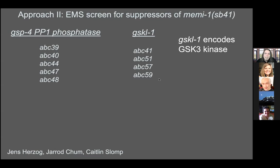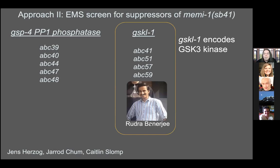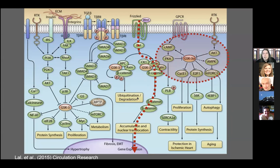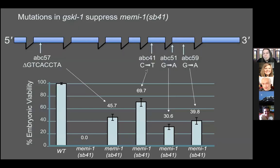We used another type of screen — EMS mutagenesis — to identify more components of this pathway. We found about 30 things, including mutations in GSP4, confirming the screen works the same way as the RNAi screen. We also got another gene called GSKL1 with four different mutations. GSKL1 encodes a kinase called GSK3. The work I'm going to talk about now is mostly done by Rudra Banerjee, a PhD student in my lab. GSK3 enzymes have a lot of roles in development and cell biology. They became somewhat famous for their role in the Wnt signaling pathway, where they are involved in targeting a protein for degradation. They're also involved in other pathways implicated in proliferation and cell cycle control.